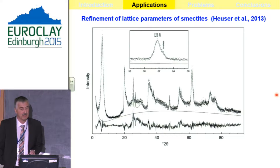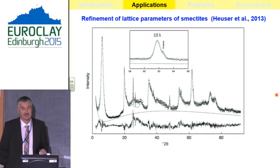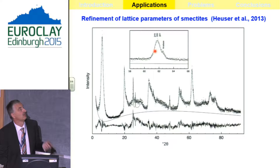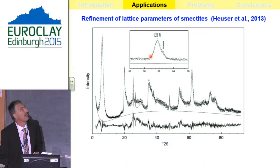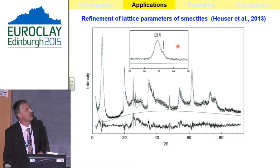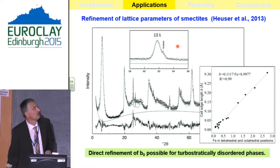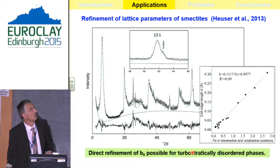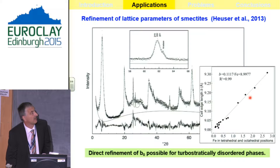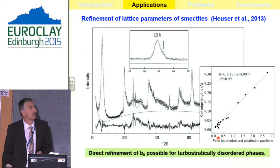With this approach, you can also do a little structure analysis. For example, you can apply this method to determine lattice parameters with higher precision than by manual peak marking, and it was possible to establish a new correlation between lattice parameters of smectite and iron in tetrahedral and octahedral positions.